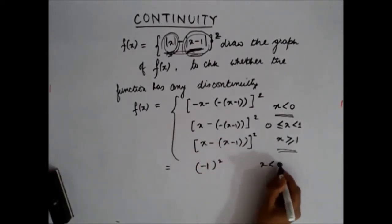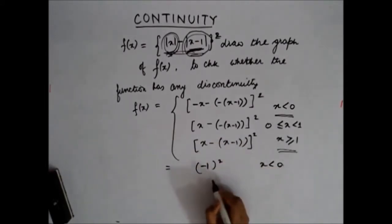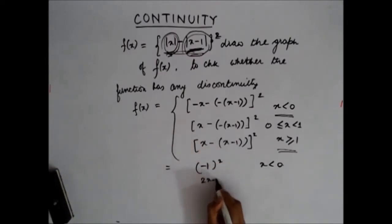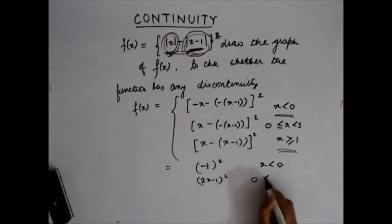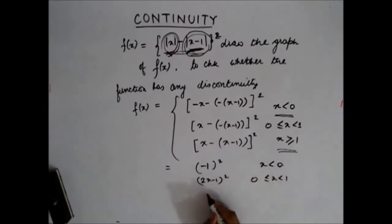For x less than 0, after squaring we get 1. For x between 0 and 1, I get the expression 2x minus 1, whole squared.